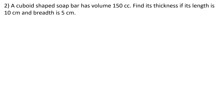Moving to question 2: A cuboid-shaped soap bar has a volume of 150 cubic centimetres. Find its thickness if its length is 10 cm and breadth is 5 cm. Here thickness means height. You have to find height using the volume formula and substituting the given values.